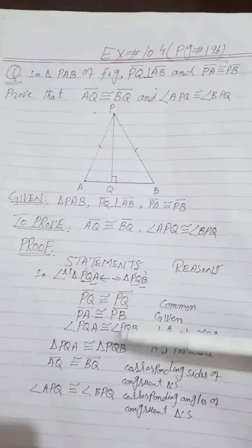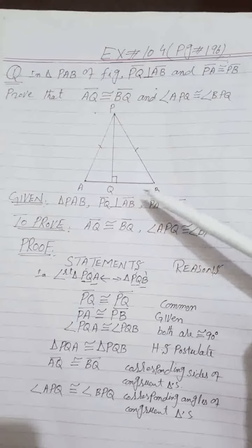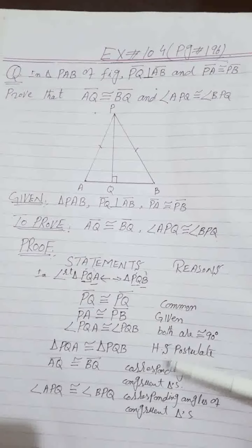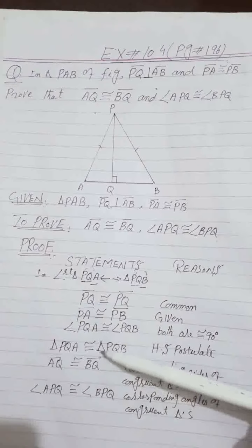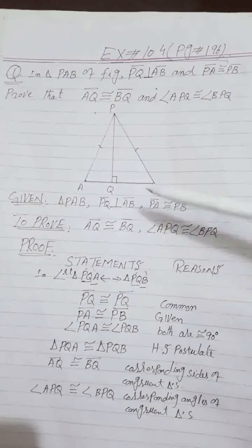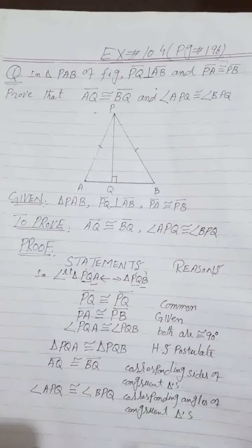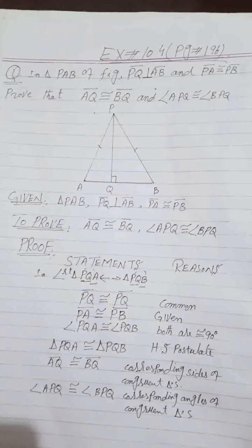These are the corresponding sides and corresponding angles. From triangle PQA and PQB, AQ corresponds to BQ — so they are congruent. Angle APQ corresponds to angle BPQ — so they are also congruent. These are the corresponding angles of congruent triangles. We have proved Exercise 10.4, Question 1.